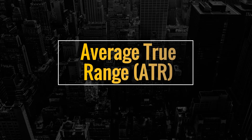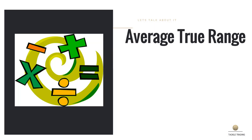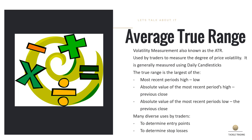The Average True Range, also known as the ATR, from Tackle Trading, is a very common and popular indicator to put on your charts. It's used for many different purposes by traders and investors alike. It's typically called a volatility measurement — the higher it goes, the higher the volatility of the underlying stock, and the lower it goes, the lower the volatility. It tells you the speed of movement on a per-day basis when a stock is going up or down.